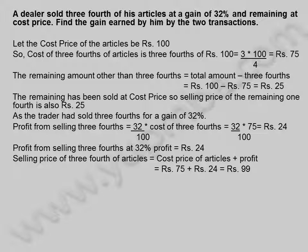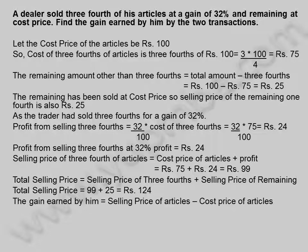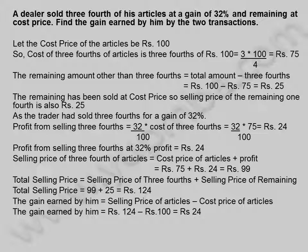Selling price of 3/4 of articles is equal to cost price plus profit, equal to 75 rupees plus 24 rupees, equal to 99 rupees. Total selling price is 99 plus 25, equal to 124 rupees. The gain earned by him is equal to selling price minus cost price, equal to 124 rupees minus 100 rupees, equal to 24 rupees. The gain earned by him in two transactions is 24 rupees.